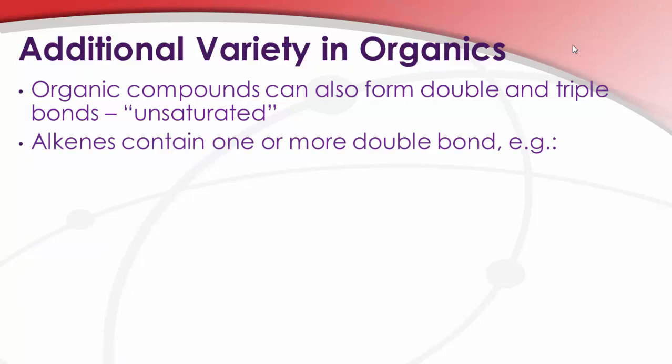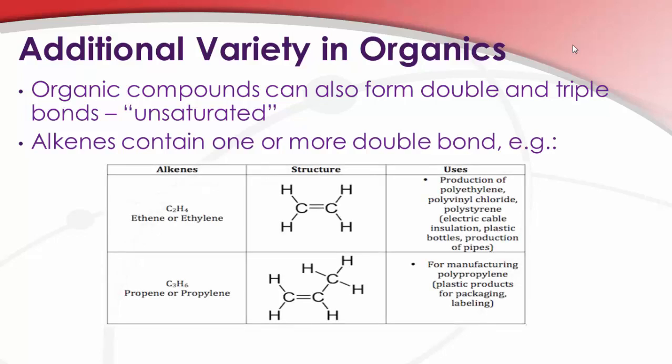So, Alkenes, the first group we'll talk about, they contain one or more double bonds. And here's the two smallest examples of Alkenes. We have ethene, the carbons connected together by double bonds. And we have propene, sometimes called propylene.